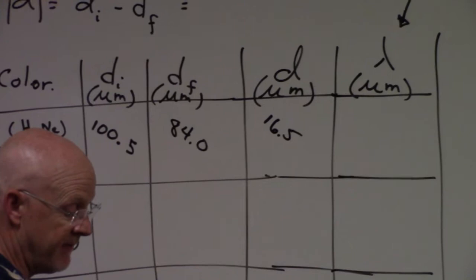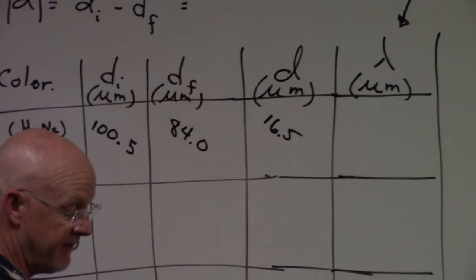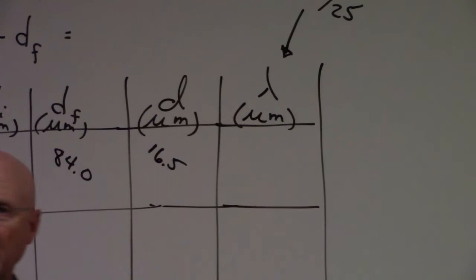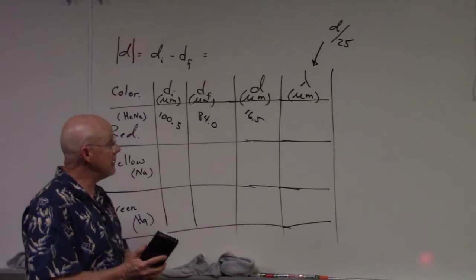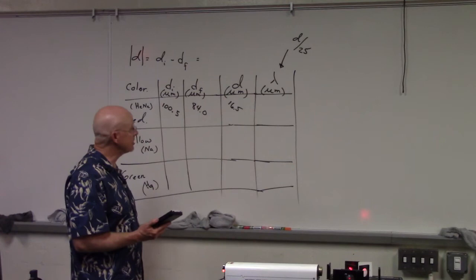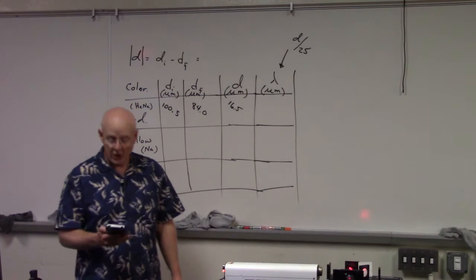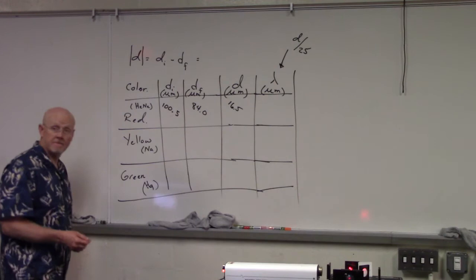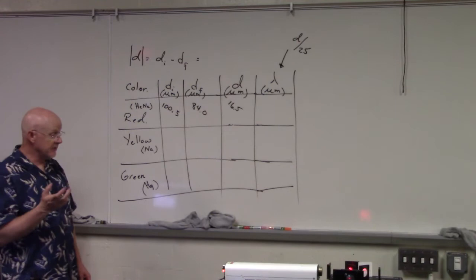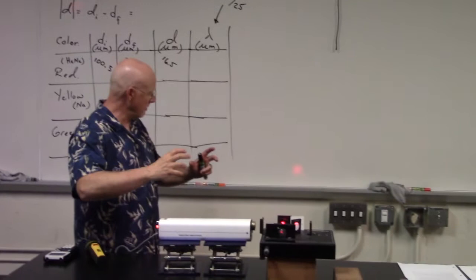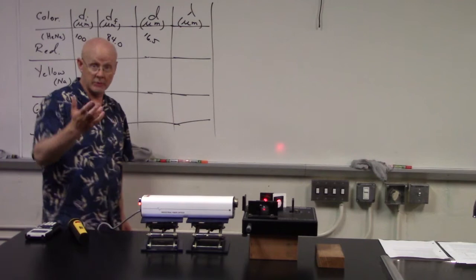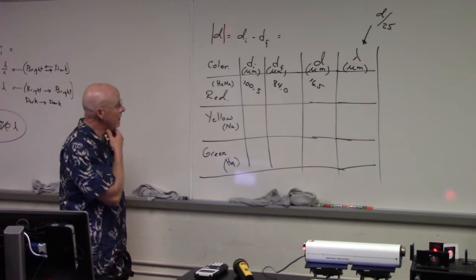So 100.5 minus 84.0 gives d = 16.5 micrometers. Divide by 25 and you get the wavelength — I'll leave the final calculation to you, but it's not a bad number. It's close to what I know this wavelength to be. It's off a little bit — I could have miscounted the fringes. The biggest problem is that every time I turn the knob it shakes so much, and the mirror moves slightly, which can cause a miscount.